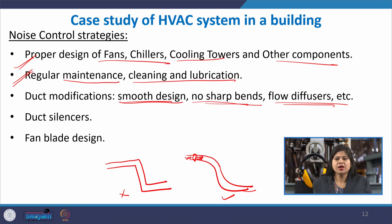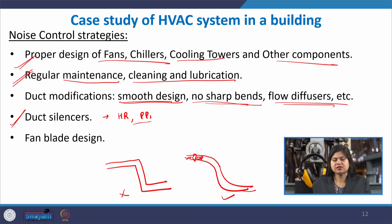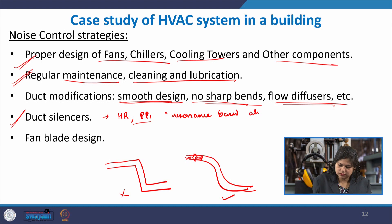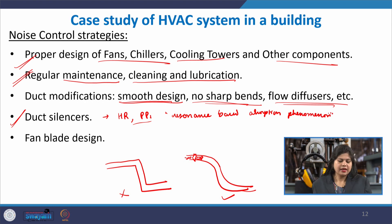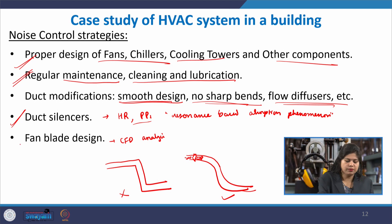Just as automotive systems have silencers in the exhaust pipe, silencers can be installed in ducts — these duct silencers typically involve Helmholtz resonators, perforated panels, and various resonance-based absorption phenomena. Additionally, CFD analysis can be used to design fan blades that produce less turbulence and smoother air flow, reducing fan noise when installed in the system.